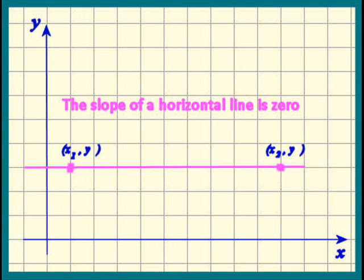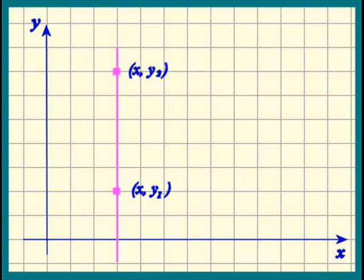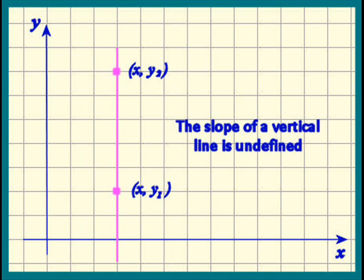The other special case is when we have a vertical line. In this case, every point on this line has the same x coordinate. So the x2 minus x1 is going to be 0. Because we cannot divide by 0, a vertical line has no slope, meaning it is undefined.